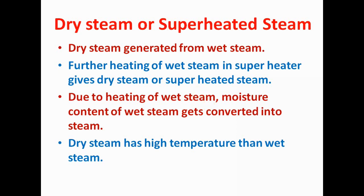Superheated steam or dry steam has a higher temperature compared to wet steam and it has zero moisture content. The difference between wet steam and dry steam: wet steam has moisture content of up to five to ten percent, whereas dry steam has zero percent moisture content and a higher temperature.